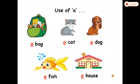Now children, first we will discuss the use of 'a'. You use 'a' with words that start with a consonant letter. In the first picture you can see the word 'bag'. Word 'bag' starts with B, which is a consonant, so you will use 'a' with it: a bag. In the second picture you can see a cat. Word 'cat' starts with C, which is a consonant, so you will use 'a' with it: a cat.